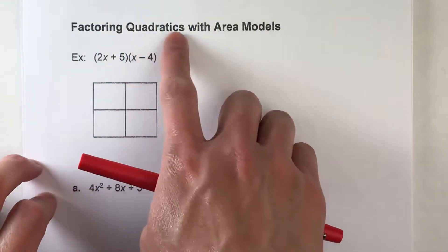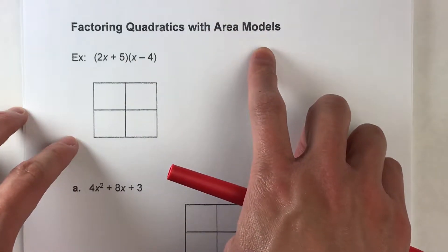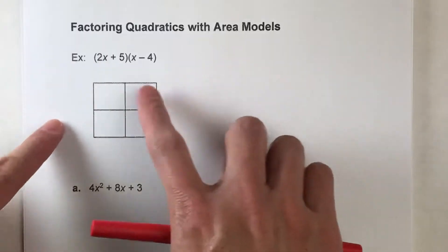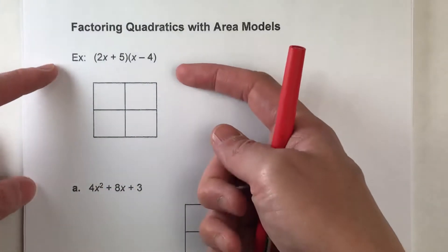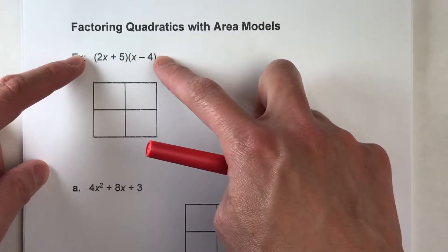So today we are factoring quadratics and we're going to use an area model in order to factor it. Now before we do that, let me show you how the area model works. So in my example, I'm giving you the quadratic already in factored form.